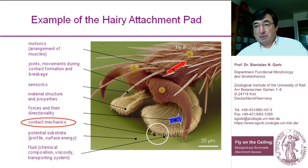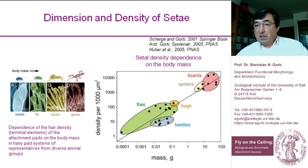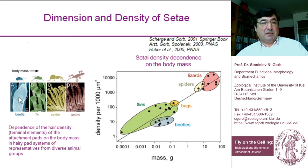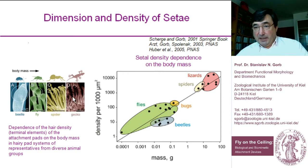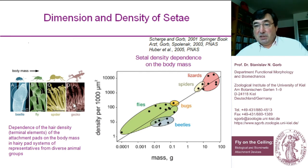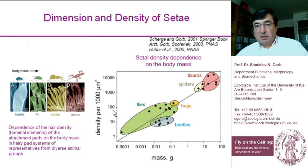Today we will discuss mainly contact mechanics, because it is quite crucial for good adhesion and what nature developed is quite exciting. In a comparative study looking not only at insects but at the sticky hairs of different animals — beetles, flies, spiders, geckos — all have hairs but of different dimensions. Quite surprisingly, the larger the body mass of the animal group, the smaller the terminal contact elements. With increasing body mass, the density of structures per unit area becomes higher and the size of individual structures becomes lower — quite interesting and unexpected.